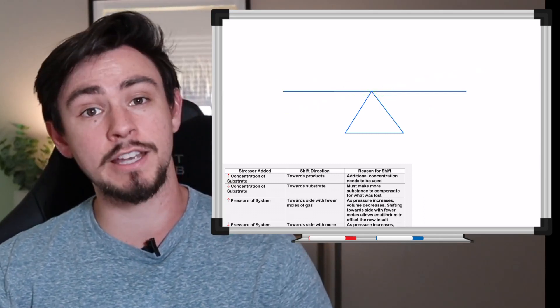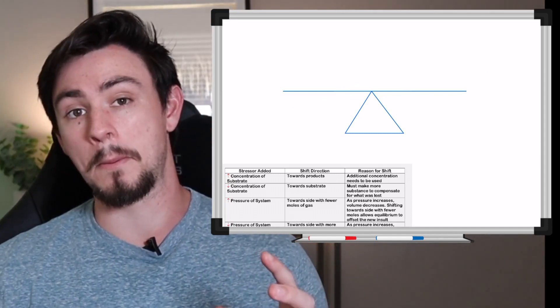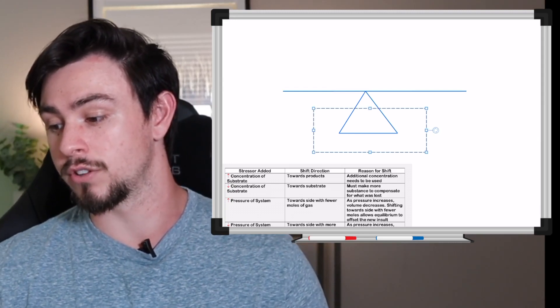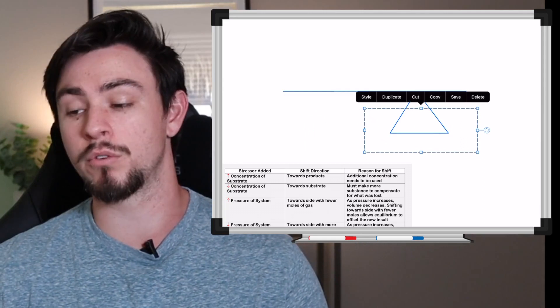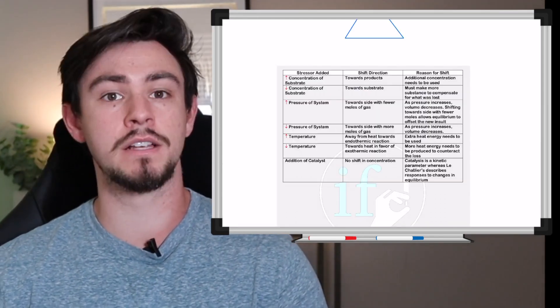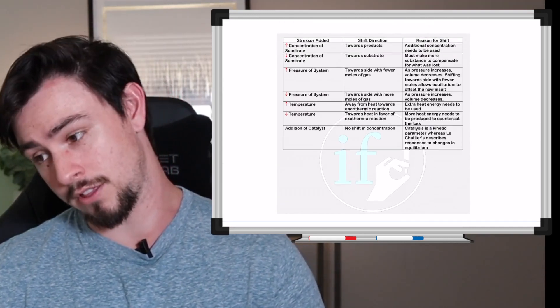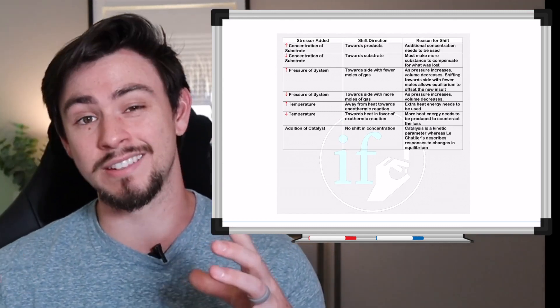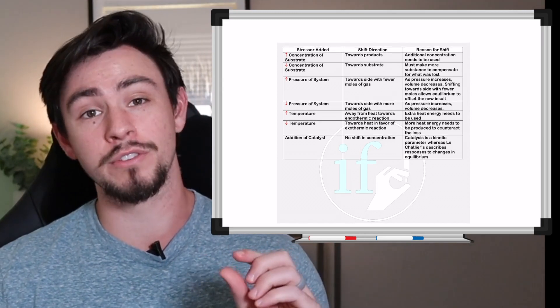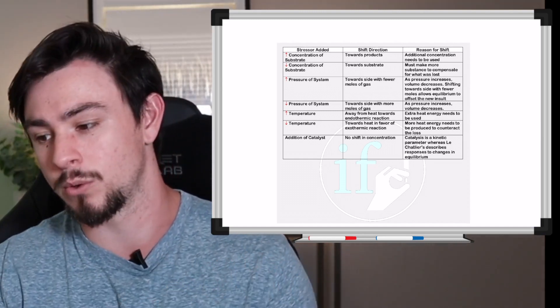Le Chatelier's principle describes the things that the equation will do in order to balance this reaction out, and so the equation will either shift to the left or it will shift to the right, meaning it will favor the reactants or it will favor the products. So here you can see I literally just screenshot one of the pages from our book and threw it in here so you can see this chart, and we're going to discuss a little bit of these stressors added, how the reaction will balance itself, how it will return to equilibrium, and why that's going to happen.